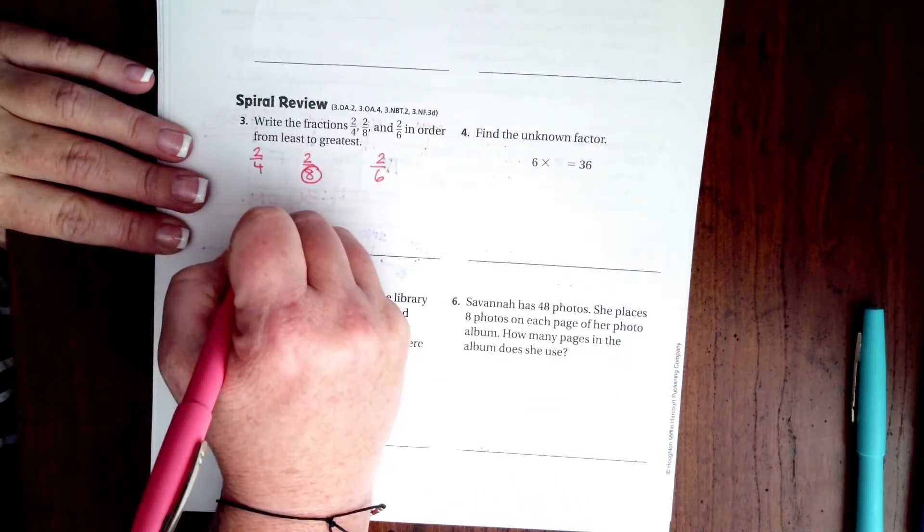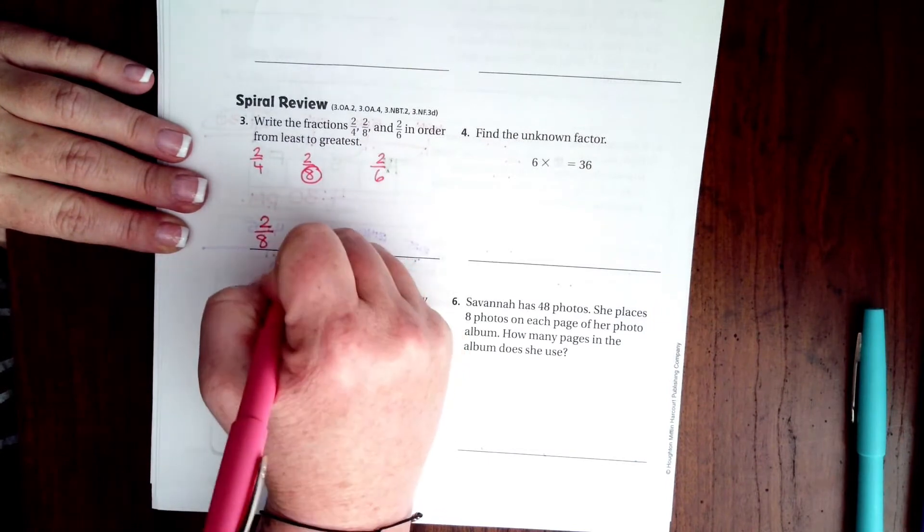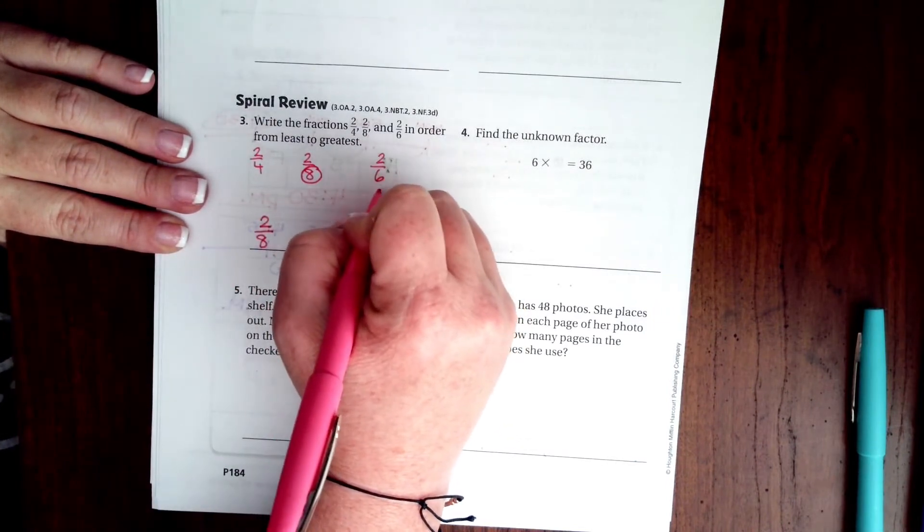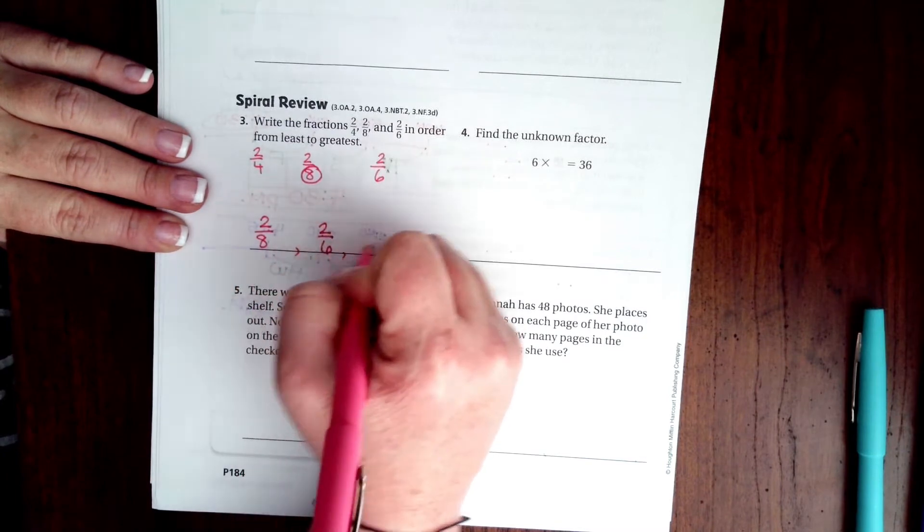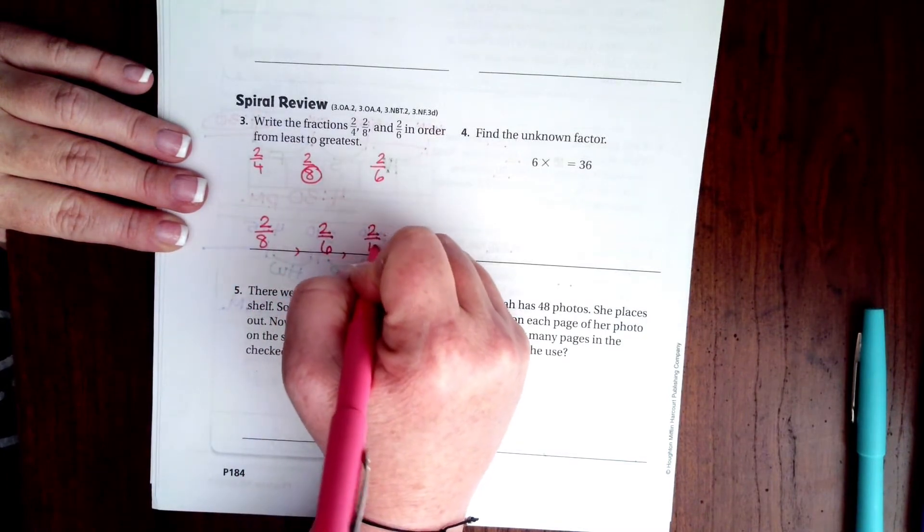So we're going to have 2/8, then 6 is the next biggest so 2/6, and lastly 2/4.